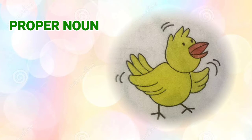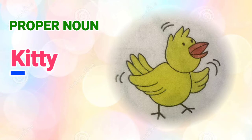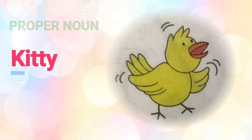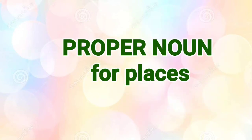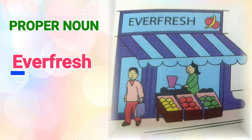Let's take another example. If you say 'it's a bird,' that's a common noun. But if you name that bird Kitty, then it's a proper noun, because Kitty starts with capital K. Similarly, if you name a place with a certain name — for example, the shop is called Everfresh — then Everfresh is a proper noun and shop is a common noun. So E will be capital and S will be in small letter.